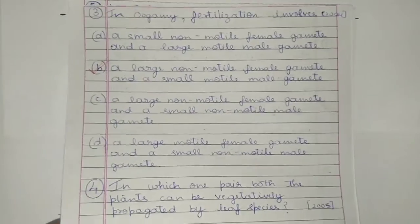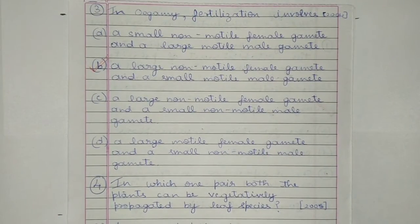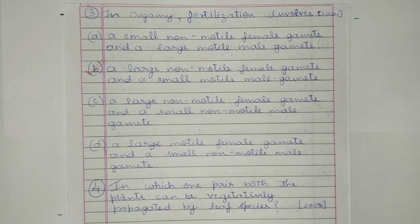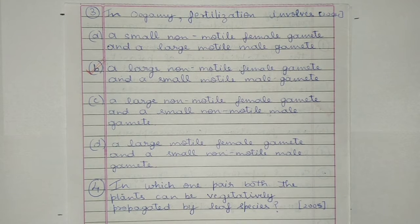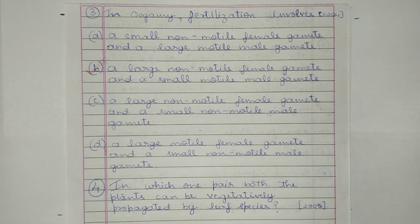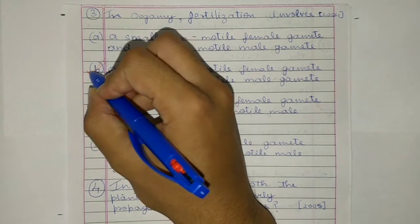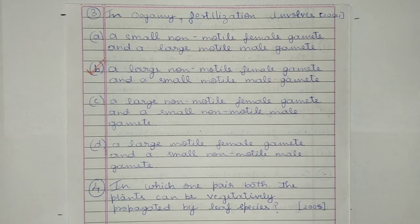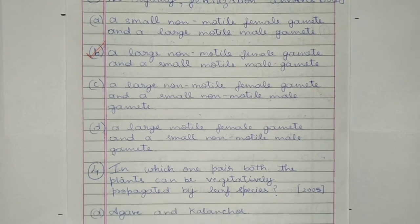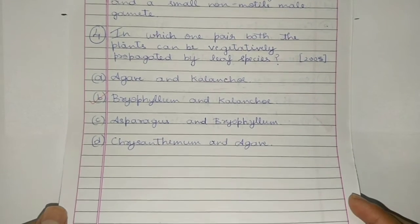Question 3. In oogamy, fertilization involves: a) small non-motile female gamete and large motile male gamete, b) large non-motile female gamete and small motile male gamete, c) large non-motile female gamete and small non-motile male gamete, or d) large motile female gamete and small non-motile male gamete. The answer is b) large non-motile female gamete and small motile male gamete.